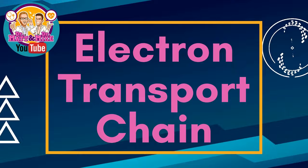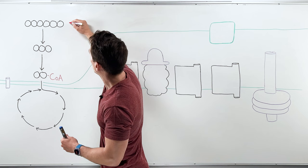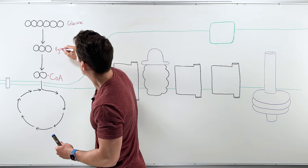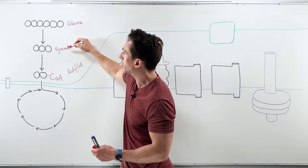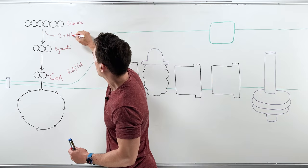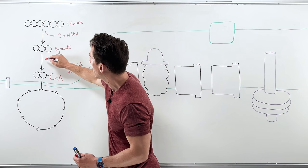All right, so what we need to understand is first of all remember we took glucose and this glucose we turned into pyruvate. In actual fact we turned it into two molecules of pyruvate which we then turned into two molecules of acetyl-CoA. All right, in this process of turning glucose to pyruvate, glycolysis, we spat out two molecules of something called NADH.